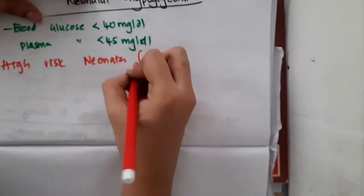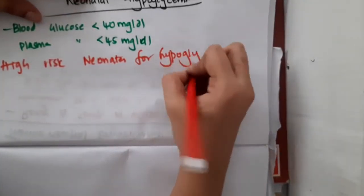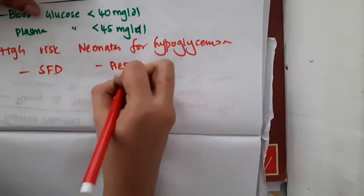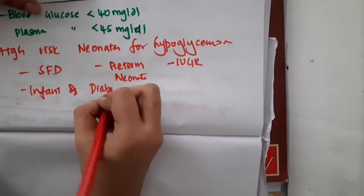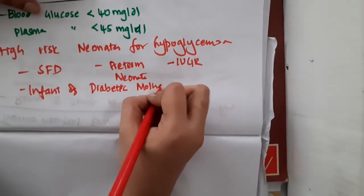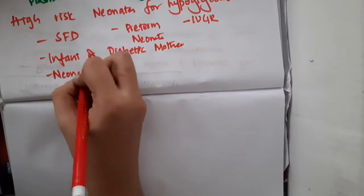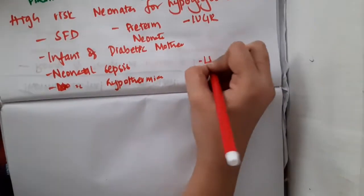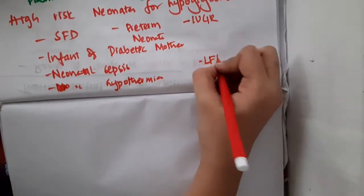If you were asked what are the high-risk neonates who are at high risk for hypoglycemia, hypoglycemia will be seen in small for date babies, it will be seen in preterm neonates, it will be seen in intrauterine growth retardation, and it is common in infant of diabetic mother. The hypoglycemia can occur, it is also seen in neonatal sepsis and it is seen in neonatal hypothermia also, and it is also seen in large for date neonates.